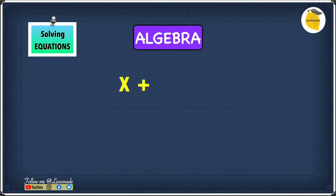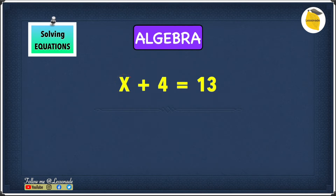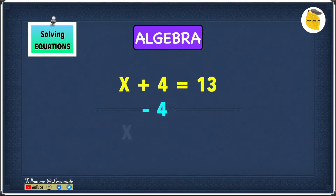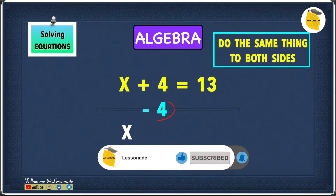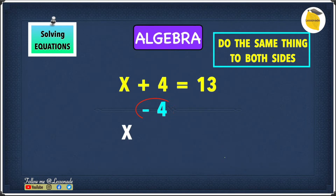Let's have a look at this example: x plus 4 equals 13. We need to make sure all symbols are on one side and all numbers on the other, which means we need to get x on its own. To get rid of the plus 4 — or to undo the plus 4 — we subtract 4, because x plus 4 minus 4 leaves just x. We do the same to both sides, so 13 minus 4 equals 9, giving us x equals 9.